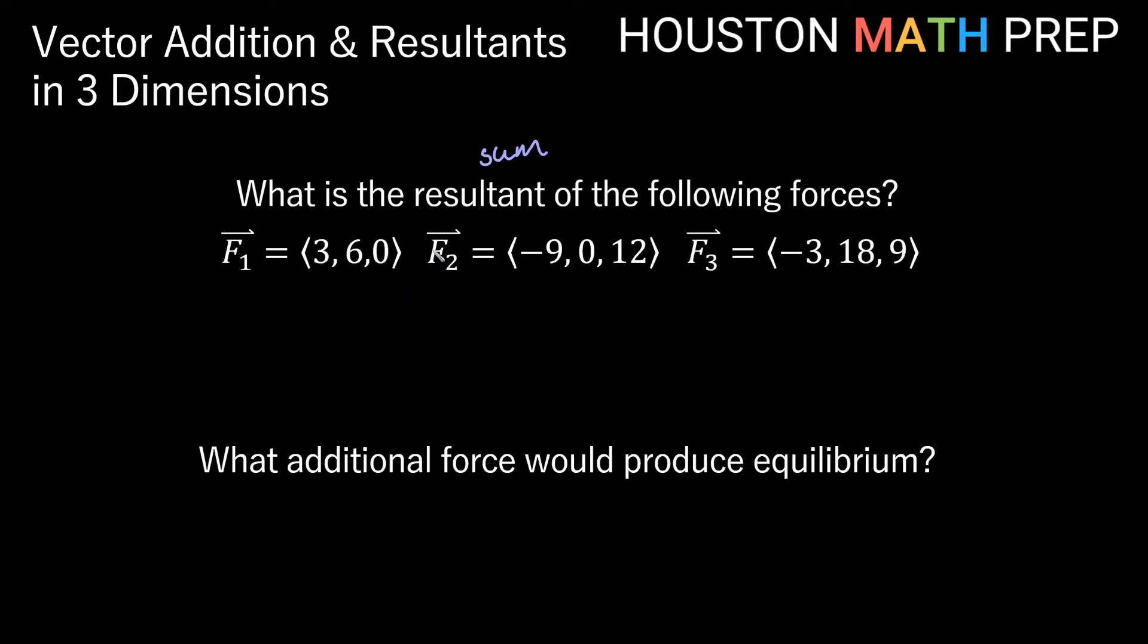I have another vector that is force number two, negative 9, 0, 12. And I have a third force vector that is negative 3, 18, 9. In science, forces are commonly written as vectors. So here we'll just go ahead and figure out the sum. So we're just going to be taking vector F1 plus vector F2 plus vector F3, and that will be our resultant.